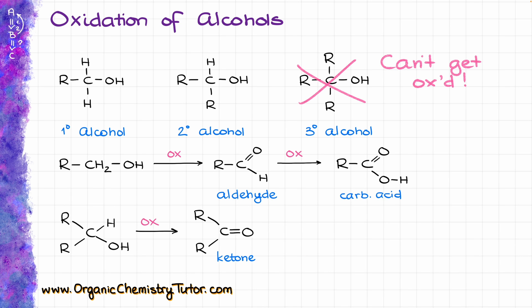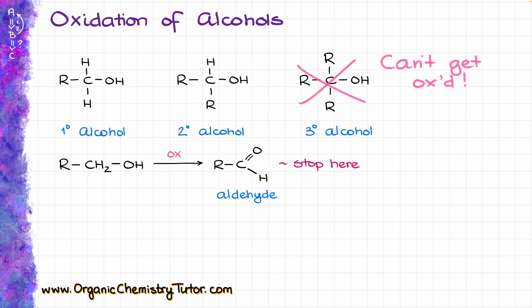Secondary alcohols can only make ketones. So, while it is irrelevant which oxidizing agent you are using for the secondary alcohol, you have to be very careful with primary alcohols because they can give you two different products. If we want to stop the formation of an aldehyde and not over-oxidize our primary alcohol to the carboxylic acid, we'll need to use special conditions and reagents.